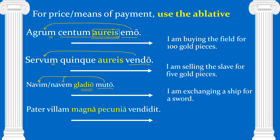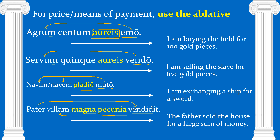Pater villam magna pecunia vendidit — who sold? Father sold. What did he sell? He sold a villam — it's in the accusative case. And what did he sell it for? He sold it for magna pecunia. The father sold the house for a large sum of money. Everything in yellow here is ablative, and that's the currency.